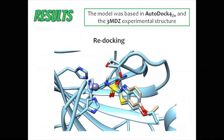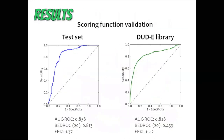The model was based on AutoDock4Zn and the 3MDC experimental structure. Here we can see the result of the redocking. The results of the ROC curves are shown in these figures along with the enrichment metrics. According to these results, the model has the ability to correctly discriminate between inhibitors and non-inhibitors.